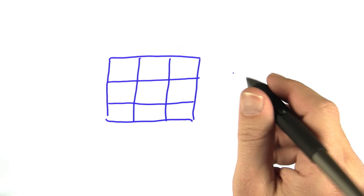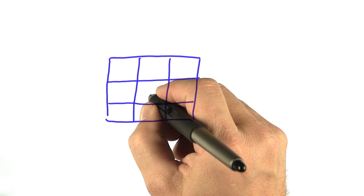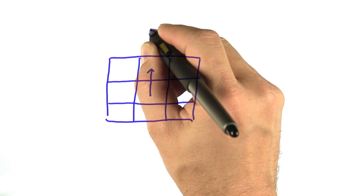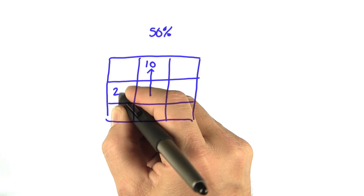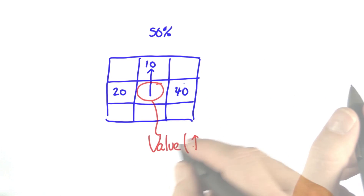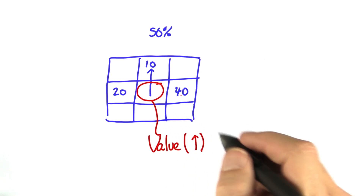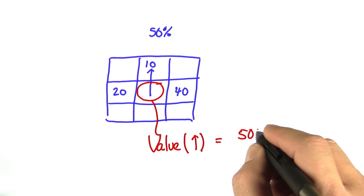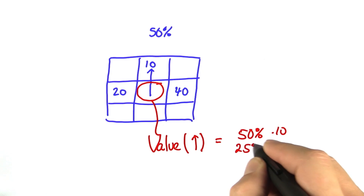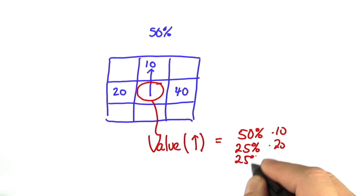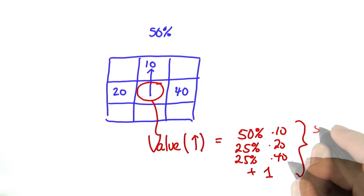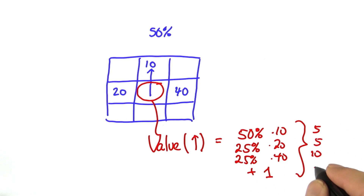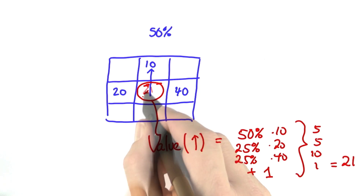I will now show you how the backup works. Suppose we study the action of going up, and we have a 50% chance of success. Suppose at the time we do the backup, the value above is 10, 20 to the left, and 40 on the right. The value of the state for the action go up is: 50% times 10, plus 25% times 20, plus 25% times 40, plus 1 (the motion cost), which gives 5 plus 5 plus 10 plus 1 equals 21.